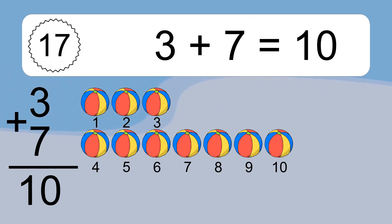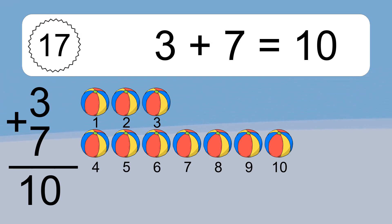3 plus 7 equals what? Let's count it: 1, 2, 3, 4, 5, 6, 7, 8, 9, 10.